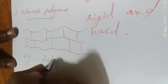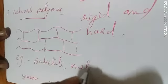The third type is the network polymer. In this case, polymer chains combine to form a three-dimensional network. As a result of this three-dimensional structure, they are generally rigid and hard. Examples include Bakelite and melamine formaldehyde.